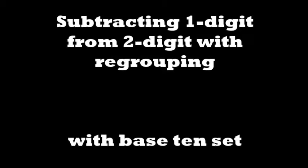Subtracting a 1-digit number from a 2-digit number. Let's subtract 7 from 63 using a place value chart. This is how you write the subtraction equation: 63 minus 7.